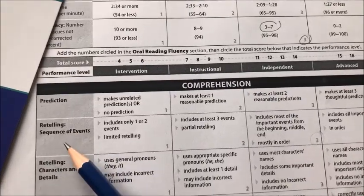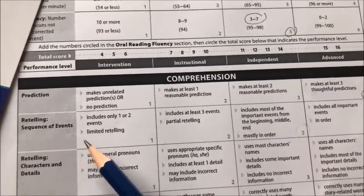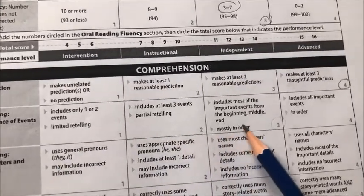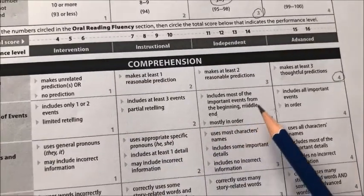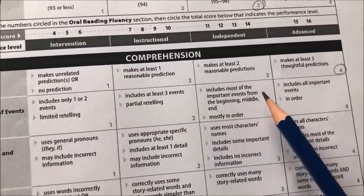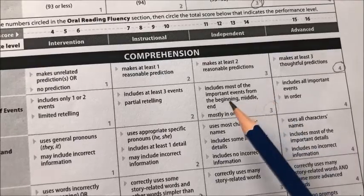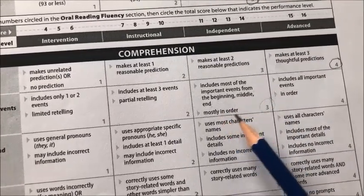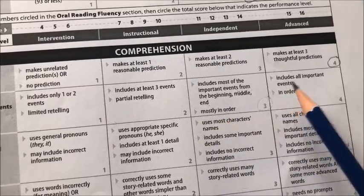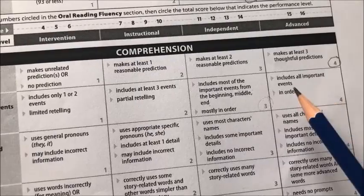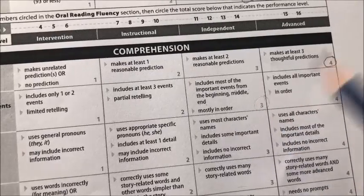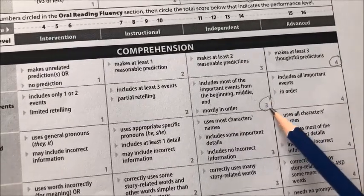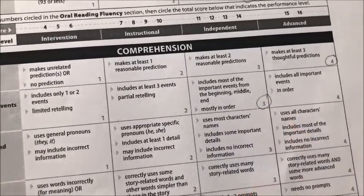For retelling sequence of events, the student did retell most of the important events from the beginning, middle, and end, mostly in order, but did miss some of the events. So we're going to circle the independent level here.